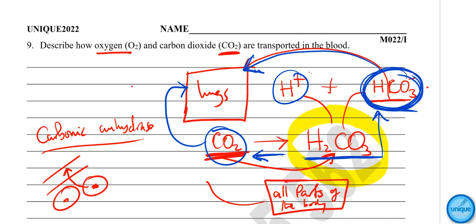In summary, carbon dioxide diffuses from the tissues into the blood. The enzyme carbonic anhydrase catalyses the dissolving of carbon dioxide to form carbonic acid. This carbonic acid dissociates to form hydrogen carbonate ions and hydrogen ions. The hydrogen carbonate ions enter the plasma and are transported to the lungs, where the reverse reaction reconverts them back to carbon dioxide, which then diffuses out into the atmosphere when the organism breathes out.